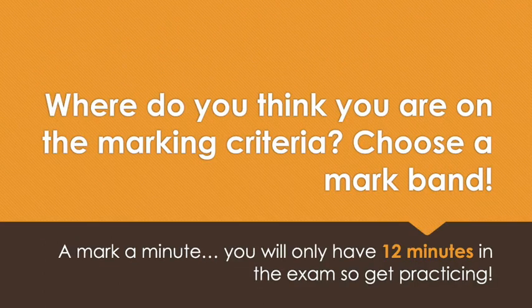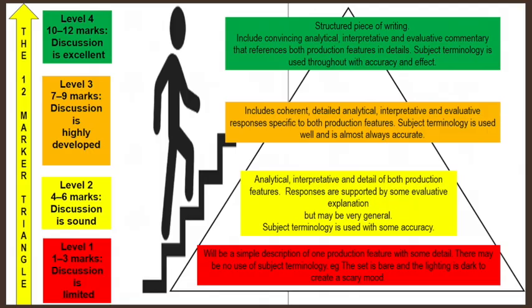Now that you have written your 12 mark question, where do you think you are on the marking criteria? Make sure you choose a mark band. You will receive one to three marks — level one — if you have included a simple description of one production feature with some detail, and there may be no use of subject terminology. For example: 'The set is bare and the lighting is dark to create a scary mood.' You will receive four to six marks — level two — if you have been analytical, interpretive, and given detail of both production features, with some evaluative explanation, but it may be general. Subject terminology is used with some accuracy.